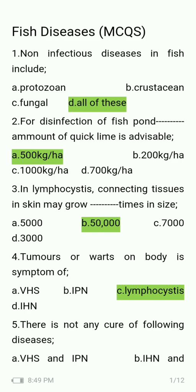In lymphocystis, connecting tissues in the skin may grow how many times in size — 5,000, 50,000, 7,000, or 3,000? The answer is 50,000.